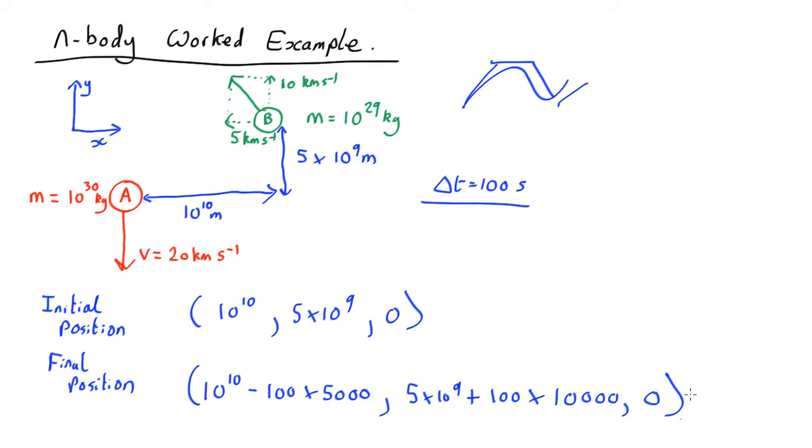And you can do something similarly for A. In this case its initial position will be 0, 0, 0. Its final position will be 0 in x. The x isn't changing and the y will be 0 minus 100 times 20,000. Okay, so that's our position at the end of a time step.